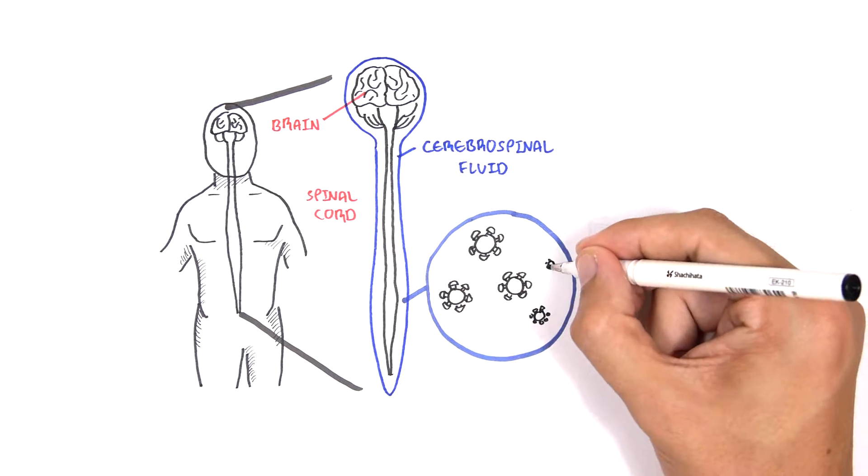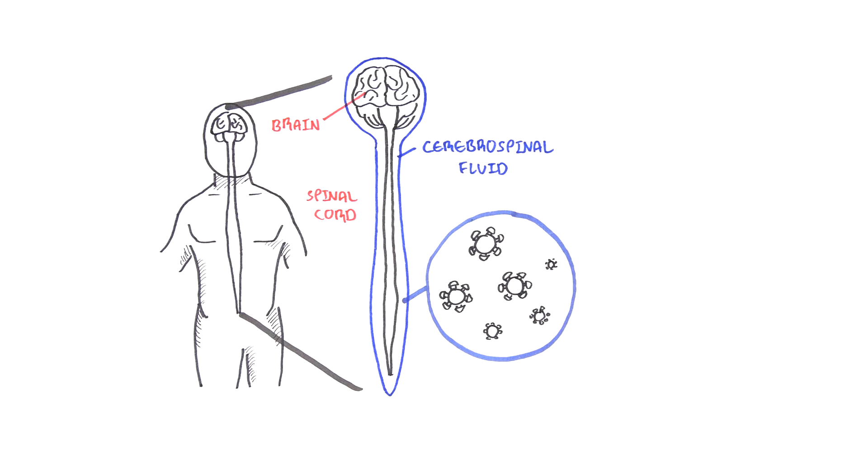In people with HIV infection, the brain might not be running right due to the presence of virus itself or due to other causes.